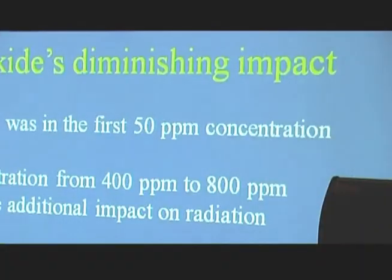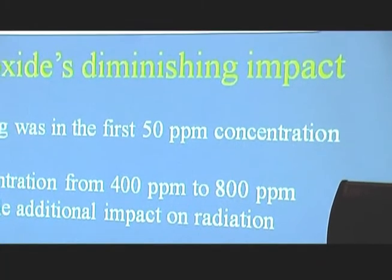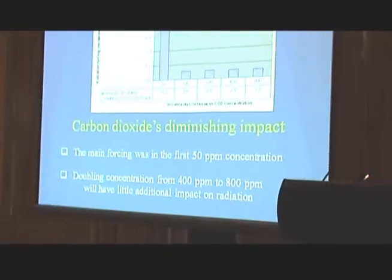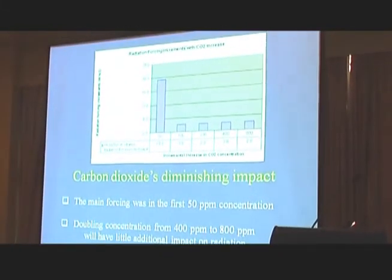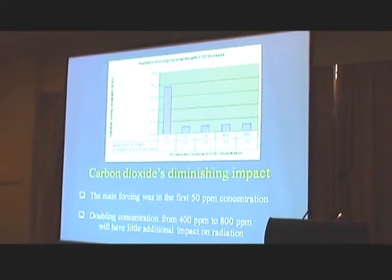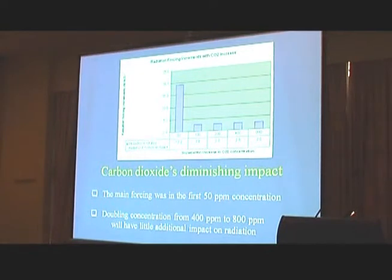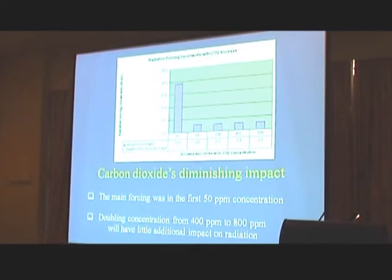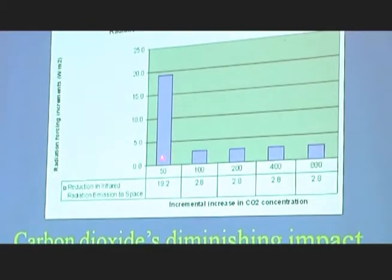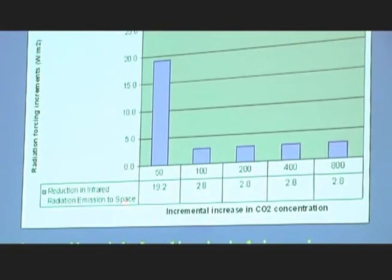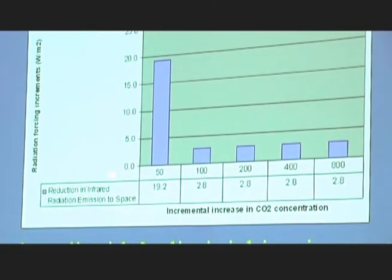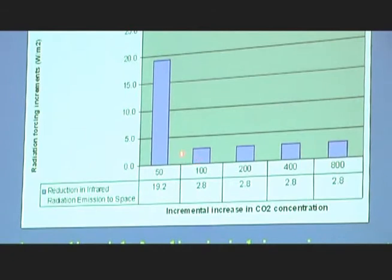We can get a very good handle on that. But first of all, let's look at how really important carbon dioxide is in the radiation processes. As the title here says, carbon dioxide has a diminishing impact. Because if you have no carbon dioxide in the atmosphere and you introduce 50 parts per million, immediately you reduce the radiation to space by nearly 20 watts per square metre. Carbon dioxide is an important and active greenhouse gas. But once you put 50 parts per million in and you double that to 100 parts per million, you only increase the impact by about 3 watts per square metre — a very little impact.